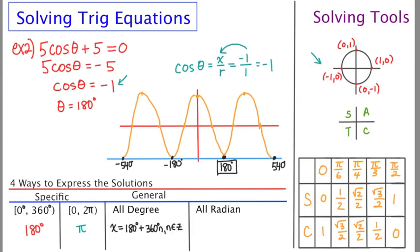Now, if we wanted to do this in radians, it's the same idea. We just have to convert to radians. So for this answer, it would be x is equal to pi plus 2 pi n, where n is an element of the integers. Much quicker. Much quicker than number one, right?